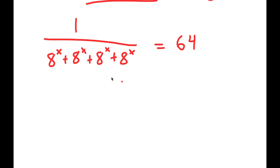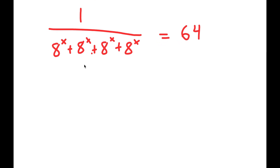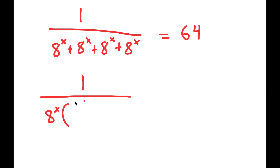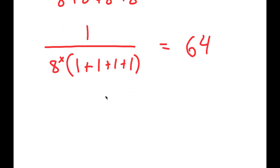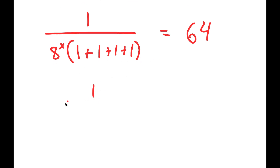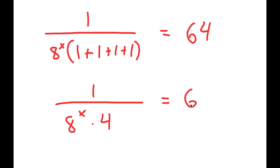Notice how I have 4 of the same terms in my denominator, meaning I can factor out that one term. So I get 1 over a to the power of x times — well, a to the power of x divided by a to the power of x is 1 — so I get 1 plus 1 plus 1 plus 1, which is equal to 64. And 1 plus 1 plus 1 plus 1 is 4, so I get 1 over a to the power of x times 4 is equal to 64.